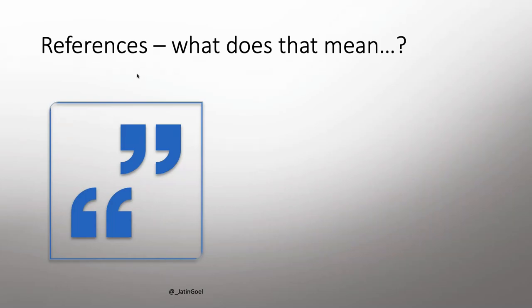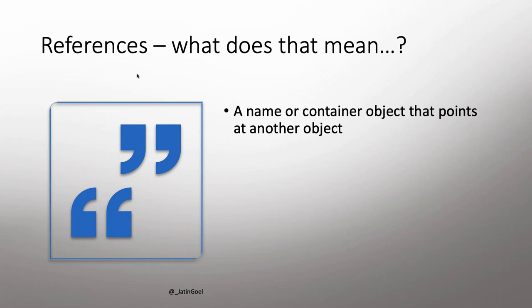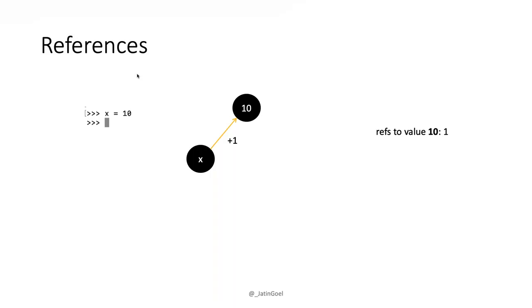We talked about names having references to objects — a reference is basically just a name that holds the memory location of that object. Now let's talk about reference count. For any object, Python maintains a reference count. When you do 'x equals 10' in the Python terminal, it creates an object in memory with value 10, creates the name x in the stack, and the reference count is set to one.